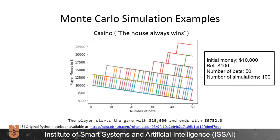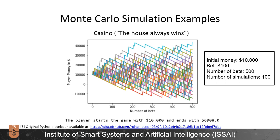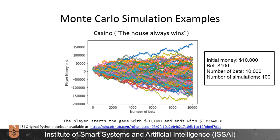After 50 consequent bets, you will have $9,752. After 100 bets, $9,720. After 500 bets, only $6,908. After 1,000 bets, even $3,492. At this point, a regular gambler wouldn't be interested in such a number of bets, but the casino will. The casino is not interested in what happens after 5 spins — they are interested in what happens after 1,000 or a million spins. Finally, after 10,000 bets, a gambler will be left with a debt of $39,348 on average. There may be one lucky person who leaves the casino with more than $150,000, but overall the casino will profit from the gamblers. And as was stated at the beginning: the house always wins.